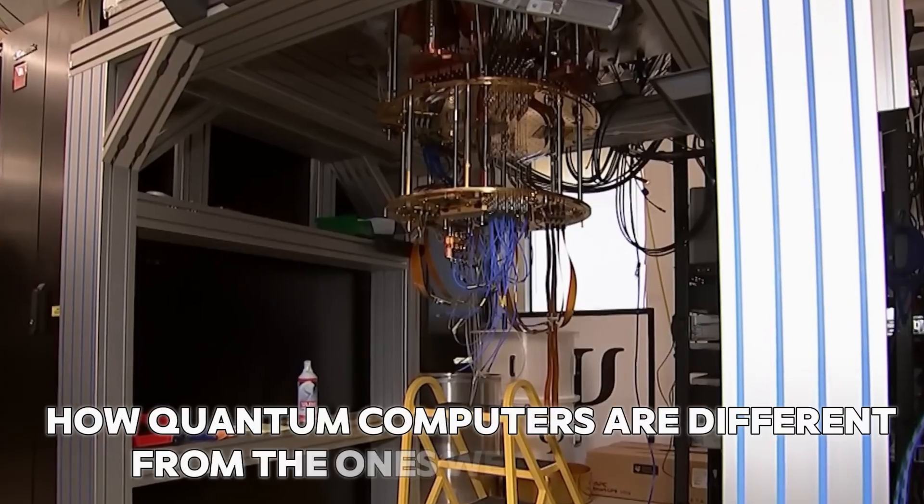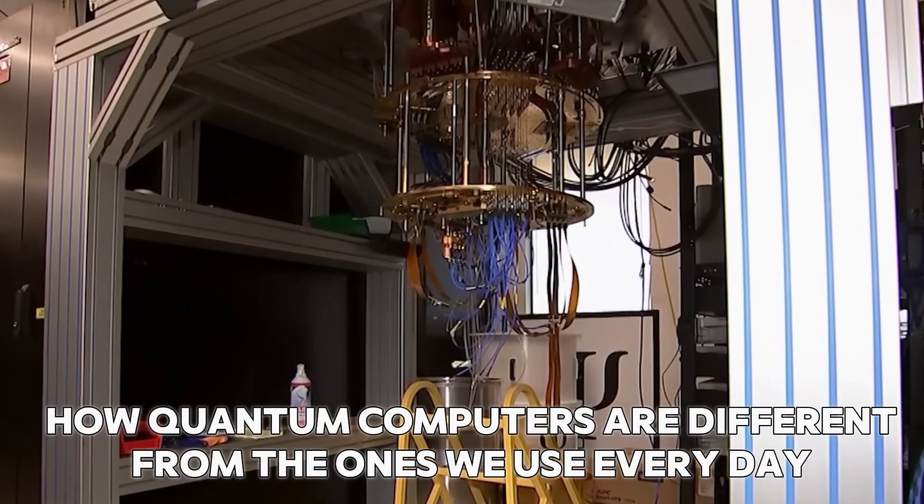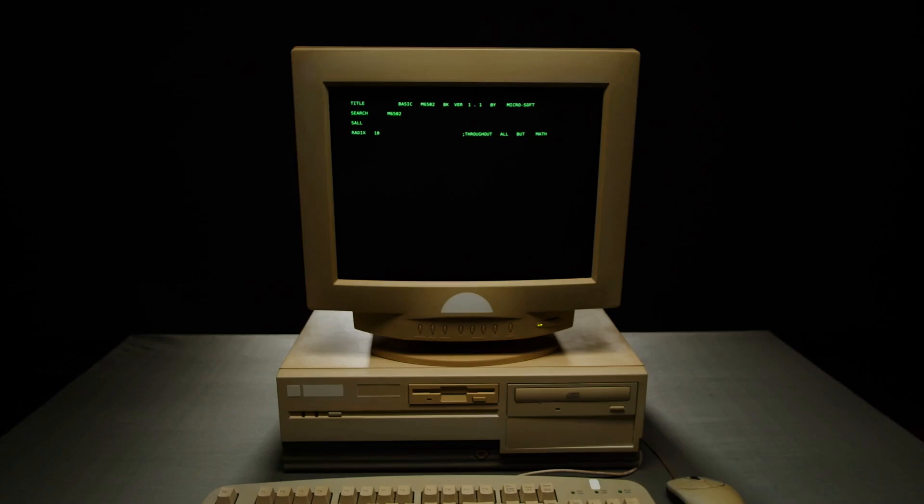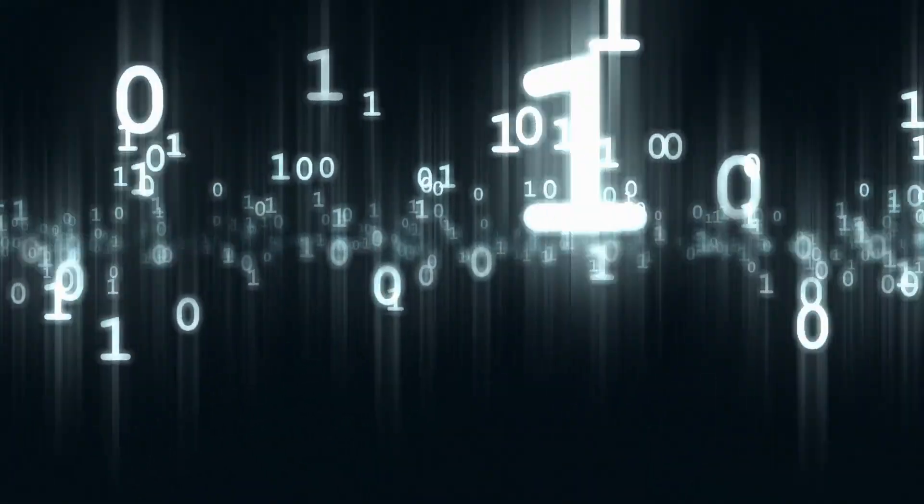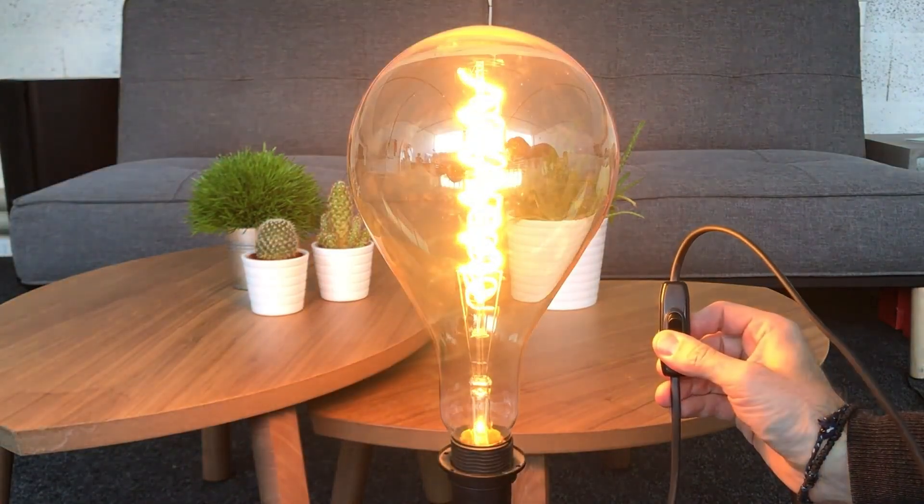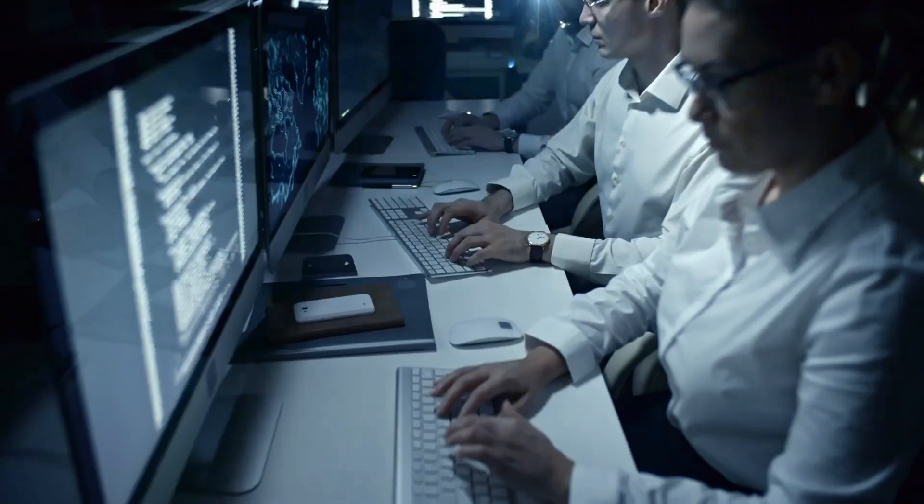First, let's talk about how quantum computers are different from the ones we use every day. Regular computers use something called bits. A bit is like a light switch. It's either on or off, a zero or a one. That's how they figure things out, step by step. It's simple, but it can only do so much at once.